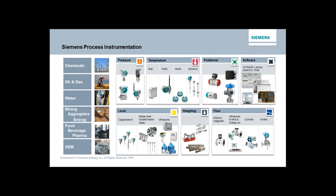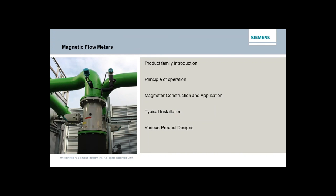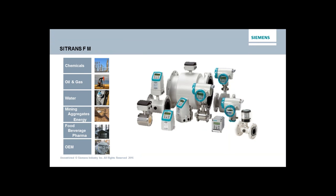Just a quick commercial before we get started. Siemens is a full-line process instrumentation manufacturer with products in pressure, temperature, level, and flow technologies, along with mag meters, including ultrasonic — both inline and clamp-on type products — Coriolis, and Vortex meters. I'm going to run through a quick introduction of the product family, talk about how a mag meter works, how it's constructed, what are the parts that are critical, the stuff you never see because it's hidden behind the secret door. We'll look at some typical installations and various product designs.